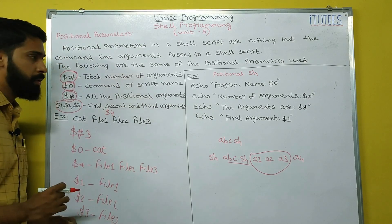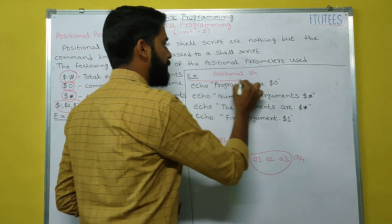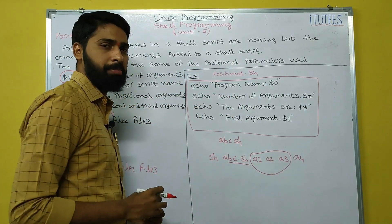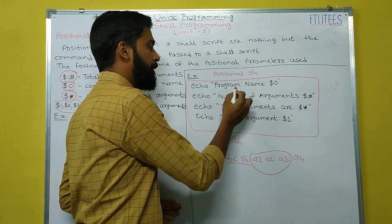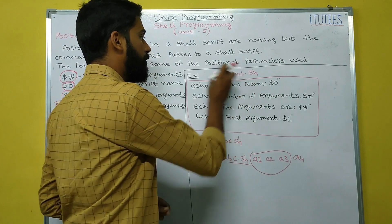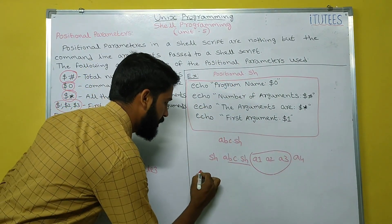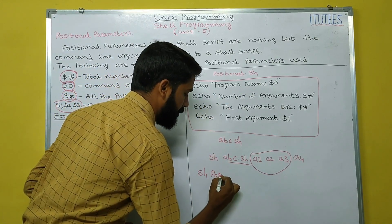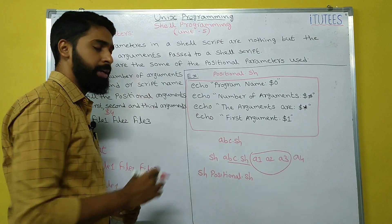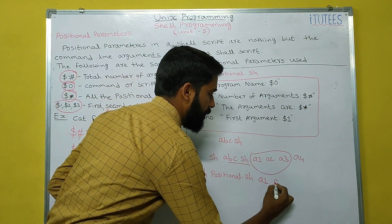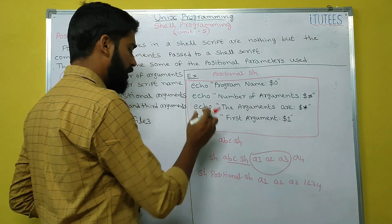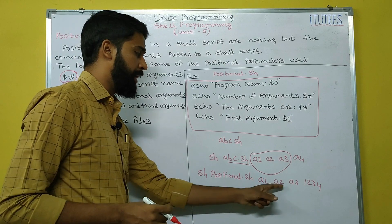So this is another example. This is the script — the script name is positional.sh. In this shell script, I want to print the program name, the number of arguments, the arguments, all the arguments, and the first argument. How I can execute this positional.sh? sh space positional.sh, then the arguments a1, a2, a3, 1, 2, 3, 4. You can give any type of data here.